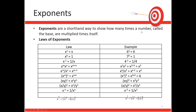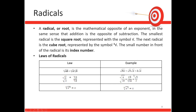Exponents are a shorthand way to show how many times a number (the base) is multiplied by itself. The laws of exponents are covered here. Radicals (or roots) are the mathematical opposite of exponents — just as addition is the opposite of subtraction. The smallest radical is the square root, and the next is the cube root. The cube root has an exponent of 1/3 and the square root has an exponent of 1/2. Laws of radicals cover how to multiply, divide, and raise radicals to exponents.